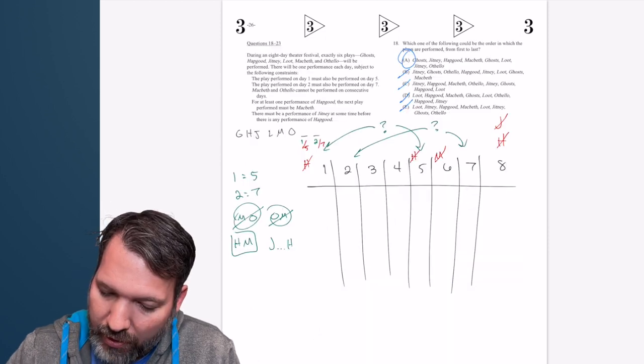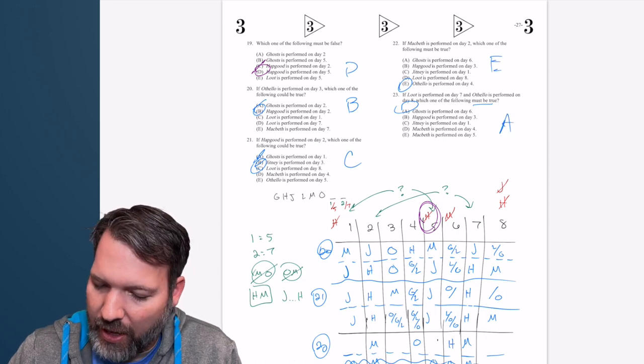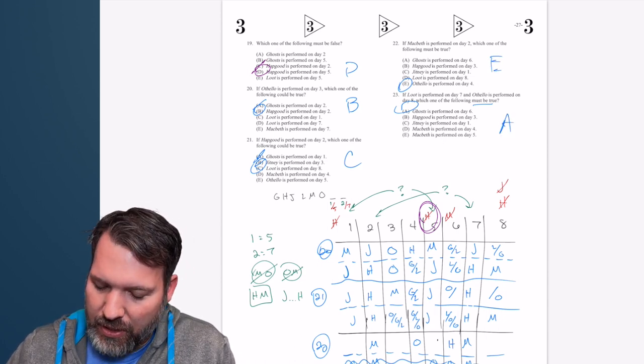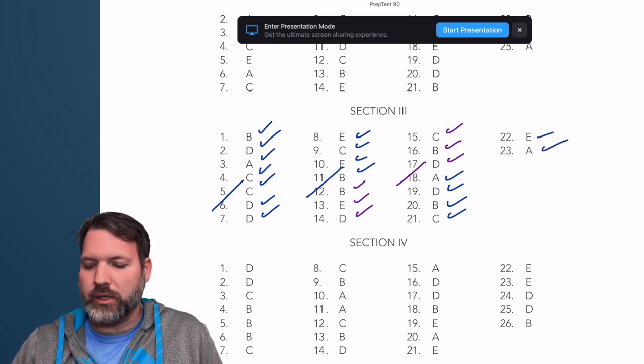All right, so what are we looking at here? A, D, B. Was that C, E, and A. A, D, B, C, E, A. Oh, goodness. All right. What's our timing?